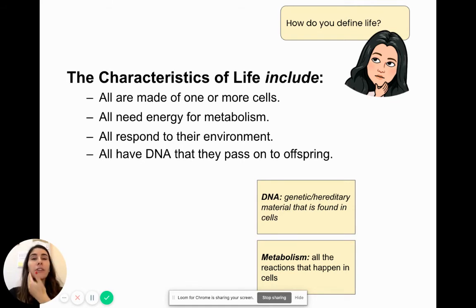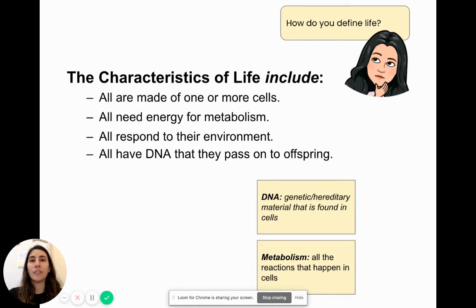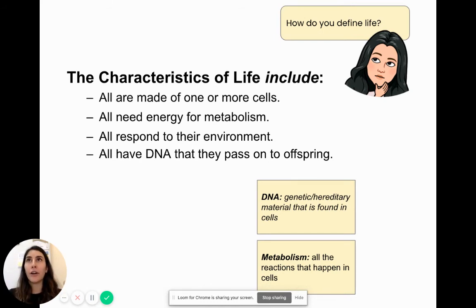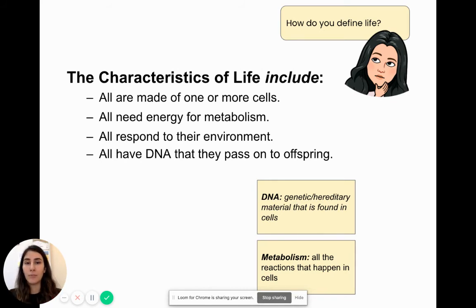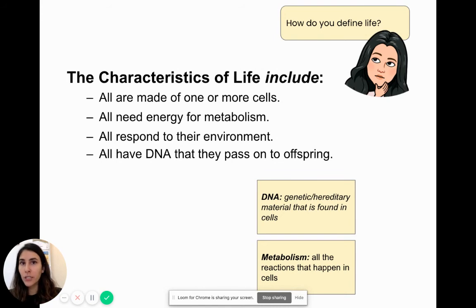Whatever you had for lunch today, that is you gaining some form of energy to power the machine that is your body — the reactions happening every second to keep you alive. Other organisms such as plants use a very different form of energy. Instead of eating food directly, they are able to use the sun's energy to make food in the form of sugar, in order to power the metabolic processes that occur in their bodies. We also have different organisms that use chemicals as a form of energy, which they convert to food in order to keep them alive.